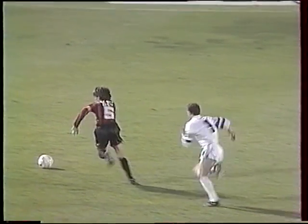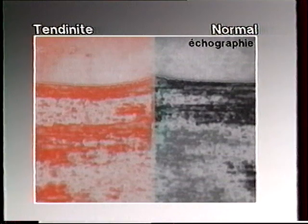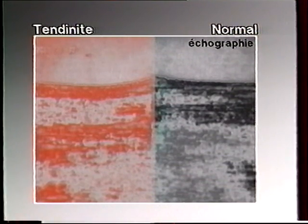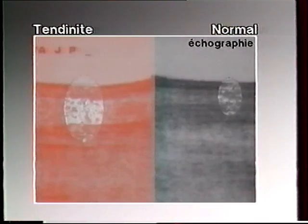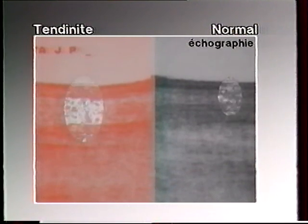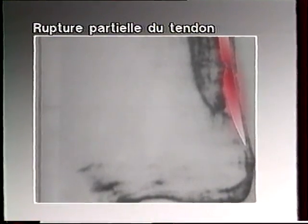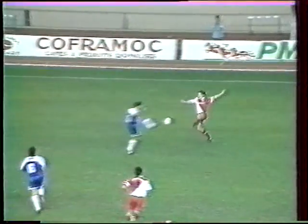Deux types de blessures sont possibles. La tendinite : une inflammation du tendon. Le tendon s'épaissit et il fait mal. Il faut le traiter par le repos et des méthodes anti-inflammatoires. L'autre lésion, c'est la rupture partielle, plus grave. Elle nécessite une immobilisation plâtrée.